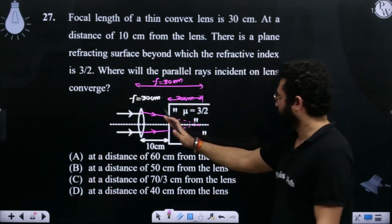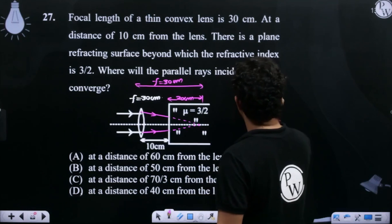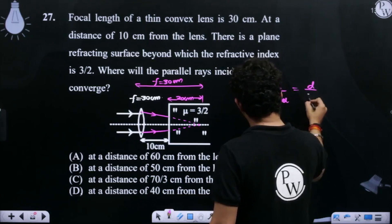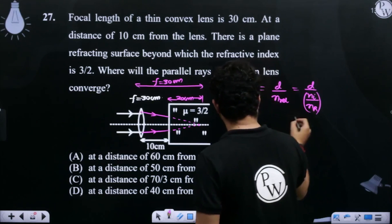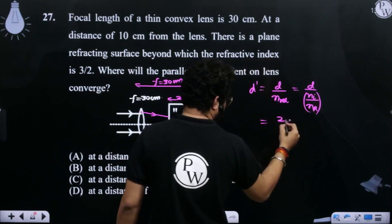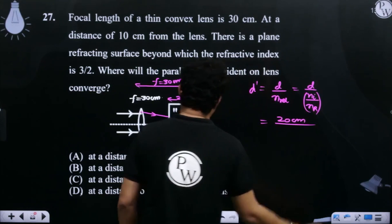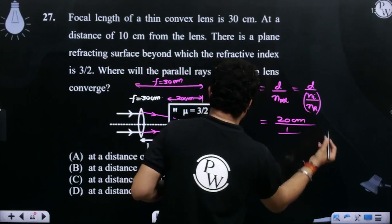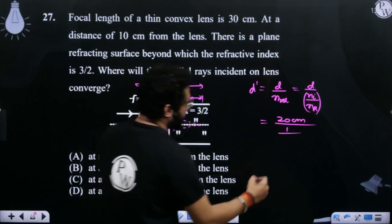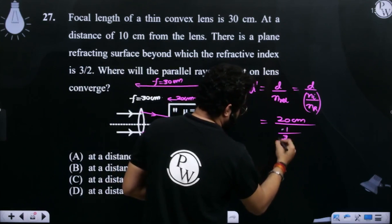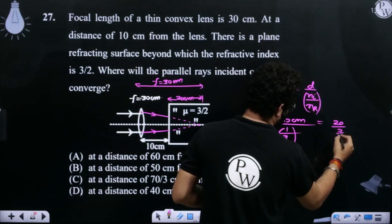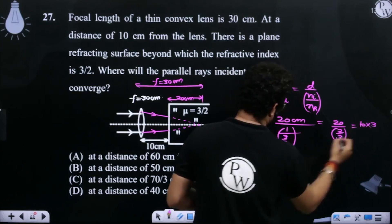Now, if I remove apparent depth here, D by N relative - D by refractive index of incident upon refractive index of refracted medium. So, depth is 20 cm. Incident medium refractive index is 1, upon this medium it is 3 by 2. So, this is 20 by 2 by 3, or 10 into 3.